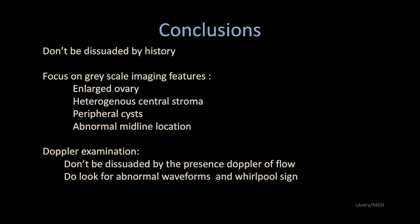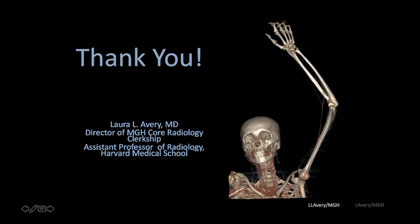In conclusion, don't be dissuaded by history — the history can be extremely variable. All you need is ovaries to consider ovarian torsion. Don't forget this can occur in the pediatric, pregnant, and perimenopausal populations. Focus on grayscale imaging: enlargement of the ovary, heterogeneous central stroma, peripheralized follicles such as the string of pearls sign, and abnormal midline location — either deep into the cul-de-sac or up over the fundus. Don't be dissuaded by the presence of Doppler flow, but do look for abnormal waveforms such as loss of diastolic flow with a high-resistant waveform, and the whirlpool sign.